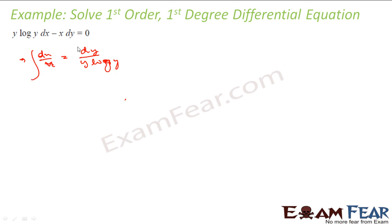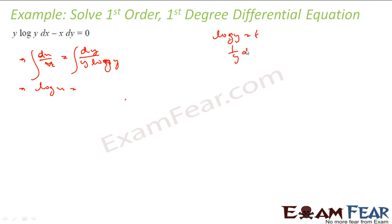You just have to integrate this to get the answer. So this becomes log x is equal to — what is this? If you put log y equal to t, you get (1/y)dy equal to dt. This becomes the integration of dt/t, which is nothing but log of t plus some constant.